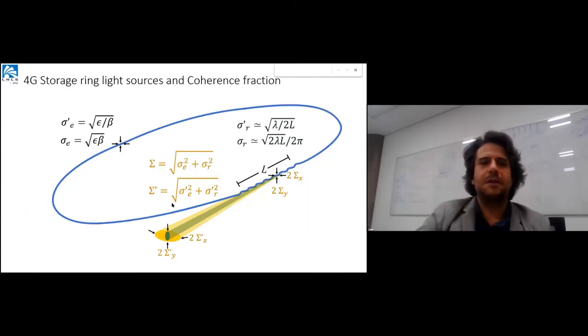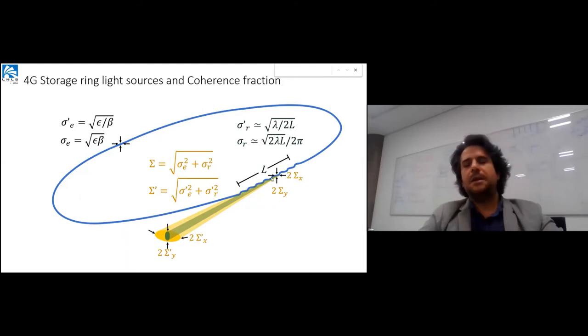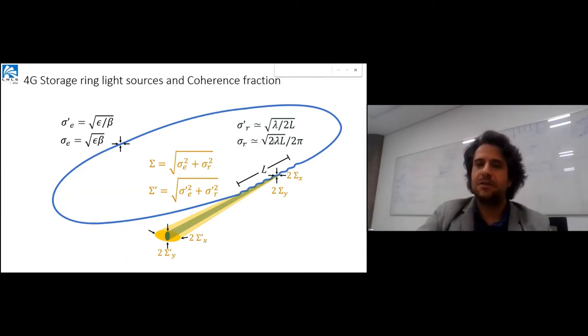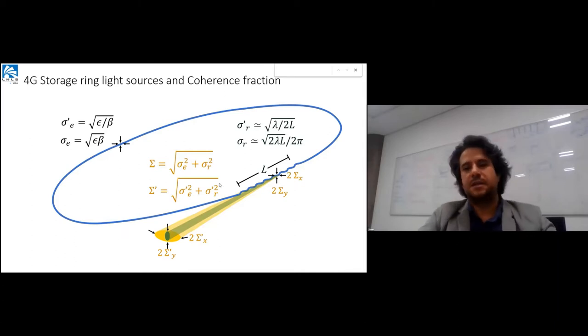Let me give two slides about what we define as fourth generation storage ring light sources. Basically, a single electron in an undulator produces radiation with a size and divergence that depends on the undulator size and wavelength. As soon as we have an electron beam with some size and divergence, the final beam is a convolution of these.